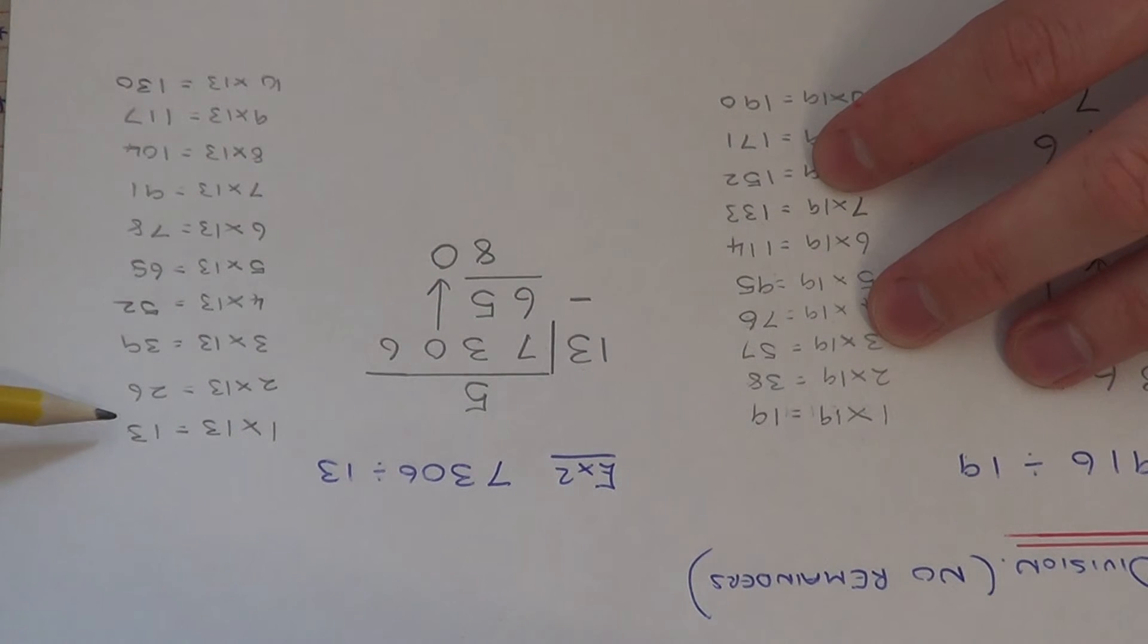And we need to work out 80 divided by 13. So again look for your best multiple of 13, which we can take off. So we've got 13, 26, 39, 52, 65, 78. 91 is too big, so 78 is our best one.